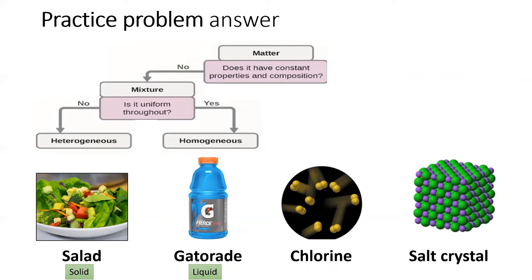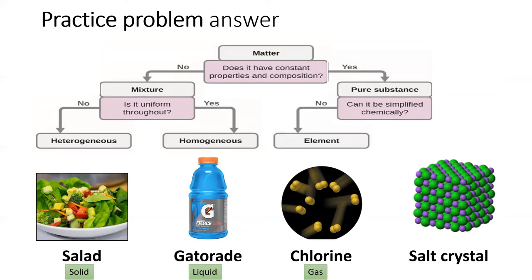Moving on, we see an atomic scale image of the gas chlorine. We know it's a gas because the atoms are separated and moving about rapidly and randomly in every direction. Now, does chlorine gas have constant properties in composition? Well, yes, it does. This entire sample is made up of the same thing, which is chlorine. Furthermore, the sample contains only atoms of chlorine, so it is considered a pure element.